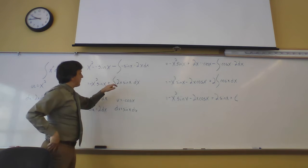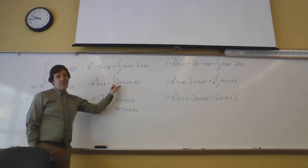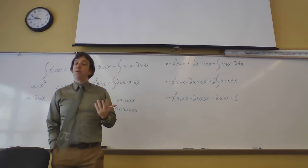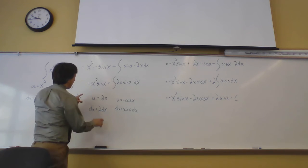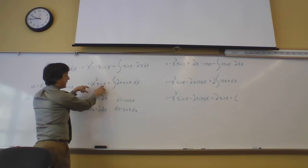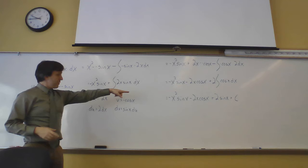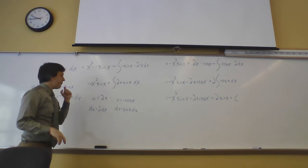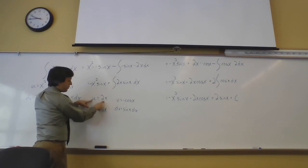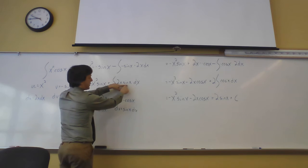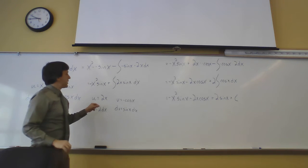Bringing the 2x out front, I have −x²·sin(x) plus the anti-derivative of 2x·sin(x) dx. Unfortunately we have to do integration by parts a second time — sometimes you have to do it more than once. The −x²·sin(x) term is done and stays as part of the answer. Starting over on the remaining integral: u = 2x, du = 2 dx, dv = sin(x) dx, and v = −cos(x).